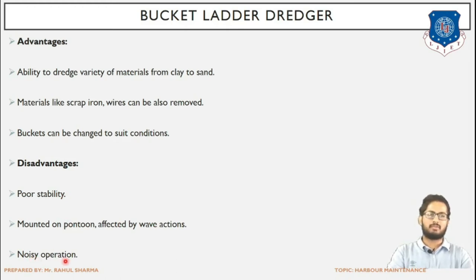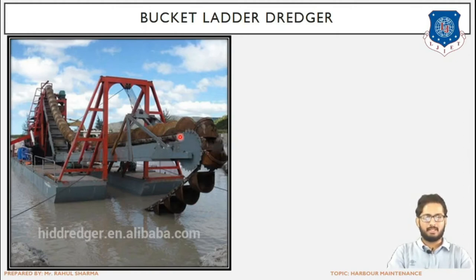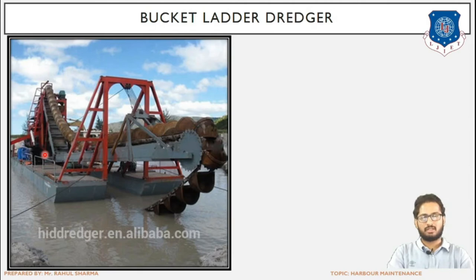This is the view of the bucket ladder dredger. This is the platform on which the dredger is placed. These are the buckets with the cutting edge — they start empty, excavate the material, bring the material up, and deposit it in the hopper. There are n number of buckets and this operation runs continuously.